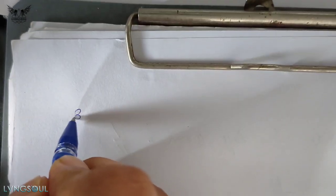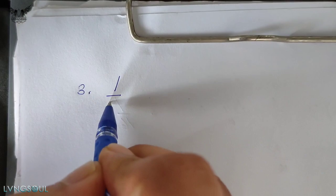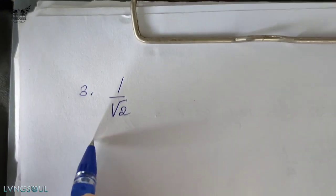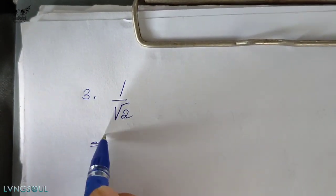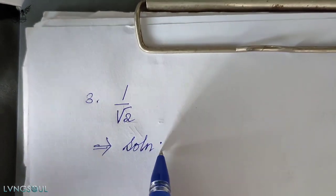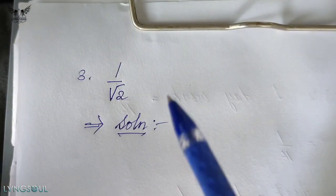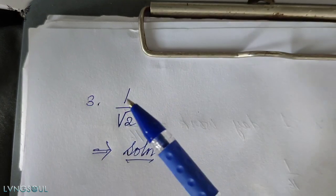Question number three: this is very simple. We have one by root two. From here we will learn that in mathematics we never leave an irrational number in the denominator of a fraction.